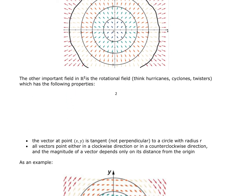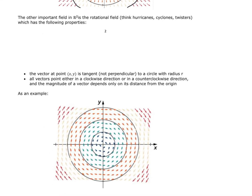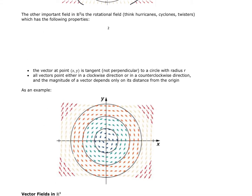Another important vector field in R2 is a rotational field — like hurricanes, cyclones, and twisters. The vectors at point (x,y) are tangential, not perpendicular, to the circle of center and radius r. All vectors either point in the clockwise or counterclockwise direction, and the magnitude of the vector depends only on its distance from the origin. You can see the transition from the white vectors into the red, orange, teal, and blue vectors as you move outward.